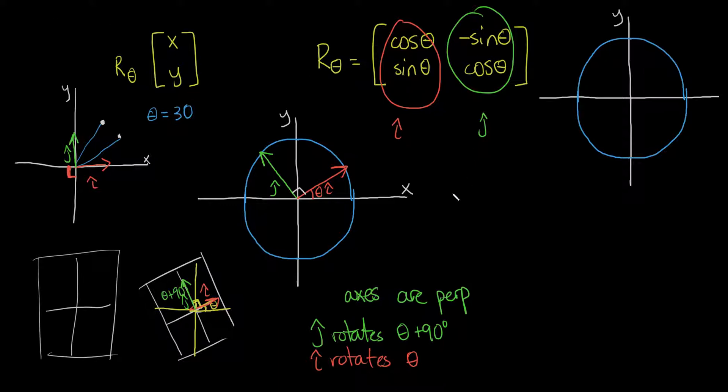So, if we write it down, another way I could write down r-theta, I could rewrite r-theta as r-theta equals, again, cosine of theta, sine of theta. I could say negative sine of theta is the cosine of theta plus 90. And I could say that the cosine of theta is the sine of theta plus 90.